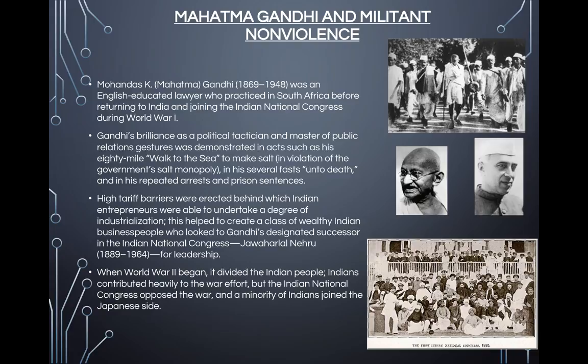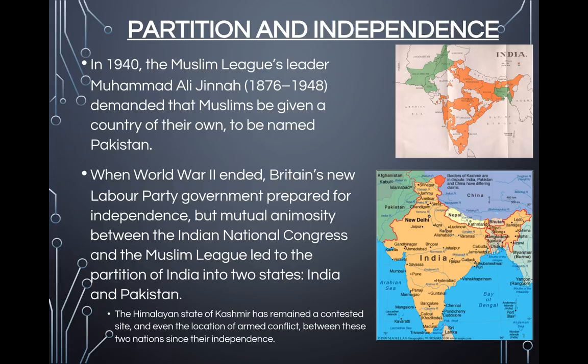When World War II began, it divided the Indian people. Indians contributed heavily to the war effort, but the Indian National Congress opposed the war, and a minority of Indians actually joined the Japanese side. In 1940, the Muslim League's leader Muhammad Ali Jinnah demanded that Muslims be given a country of their own, to be named Pakistan. When World War II ended, Britain's new Labour Party government prepared for independence, but mutual animosity between the Indian National Congress and the Muslim League led to the partition of India into two states — India and Pakistan. Partition was accompanied by violence between Muslims and Hindus and massive flows of refugees. The Himalayan state of Kashmir has remained a contested site and even the location of armed conflict between the two nations since their independence.